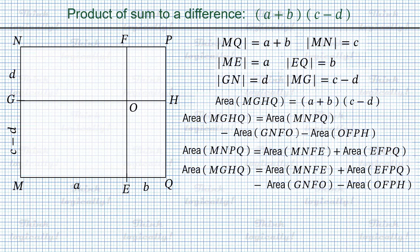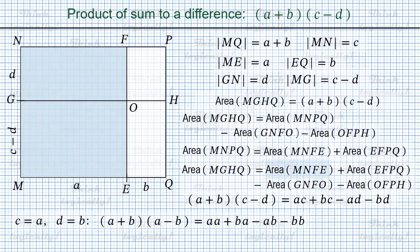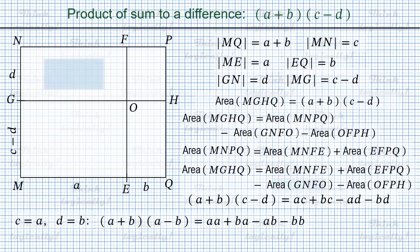And once again, we get a well-known formula. In particular, when c equals a and d equals b, rectangles MNFE and OFPH turn into squares with side lengths a and b respectively, while rectangles GNFO and EFPQ both have one side equal to a and another side equal to b, so the areas of both are a times b, which cancel out, leaving just a squared minus b squared.